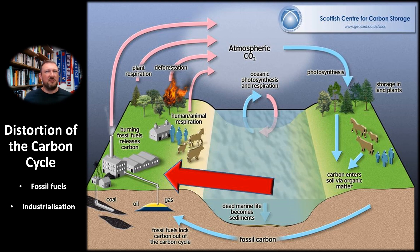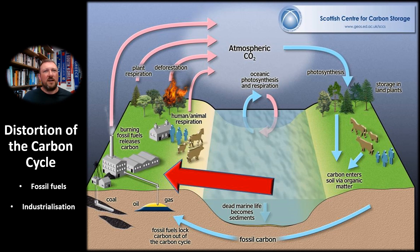Greenhouse gas concentrations began to rise steeply beyond natural cyclical variation around the year 1800 as the industrial revolution gained momentum, so there's a very strong link between industrialization and the distortion of the carbon cycle. With more carbon accumulating in the atmosphere in the form of greenhouse gases, more heat from the sun has been trapped by the greenhouse effect. This is the genesis of the climate change problem.